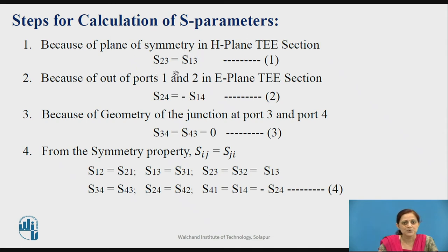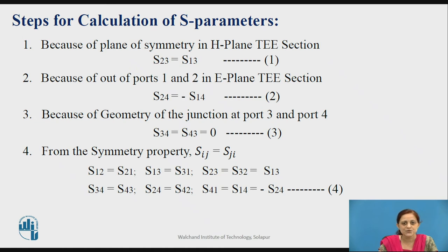Port 1 and port 2 are out of phase for the E-plane T junction, and therefore S24 is equal to minus S14. That is, if the input is applied to the E arm, the output at port 2 and port 1 are the same magnitude but out of phase, so it can be written as S24 equal to minus of S14. Because of the geometry of the junction, S34 equal to S43 equal to 0 — meaning if the input is applied to port 4, the output at port 3 is equal to 0, and if the input is applied to port 3, the output at port 4 is equal to 0.